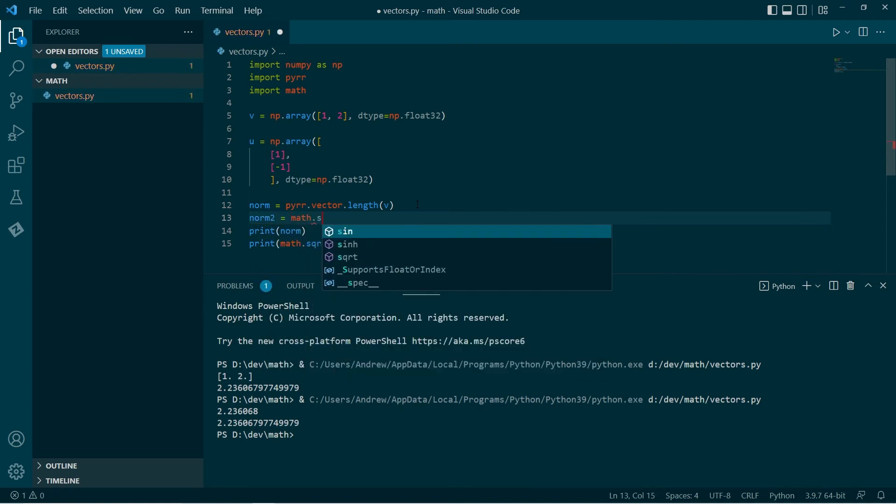So we can go norm 2 equals, take the square root of the first component squared plus the second component squared.